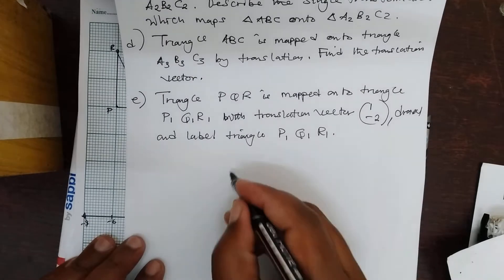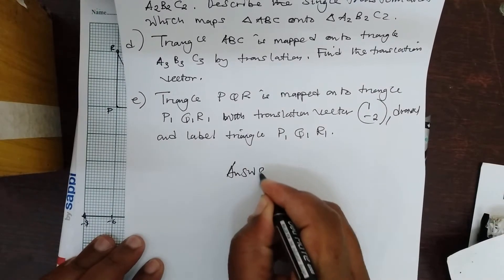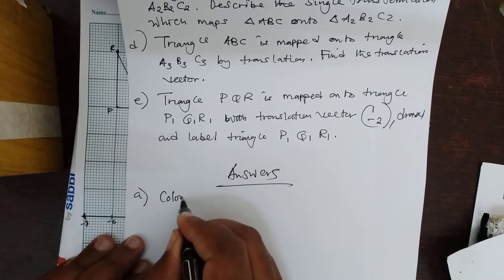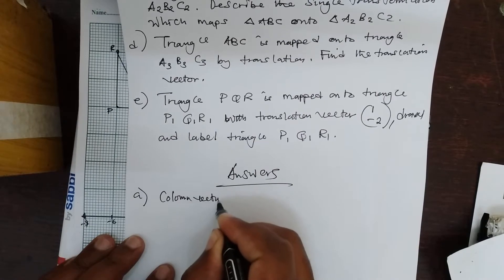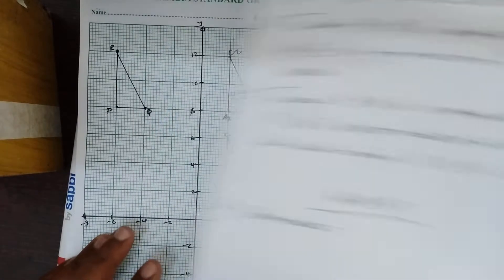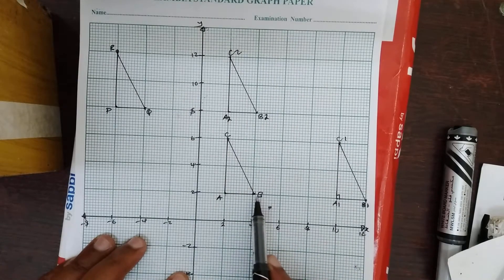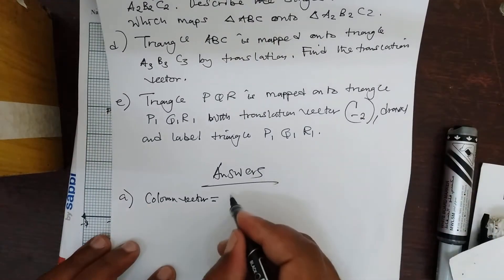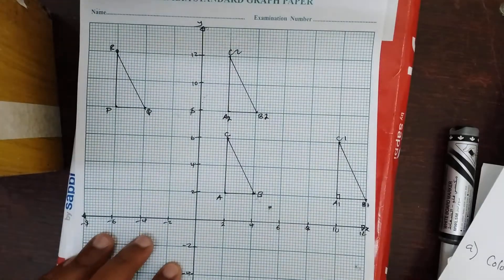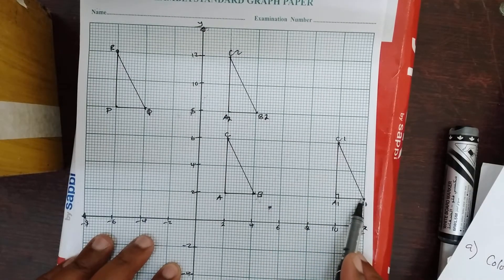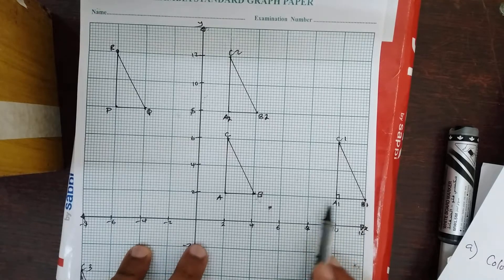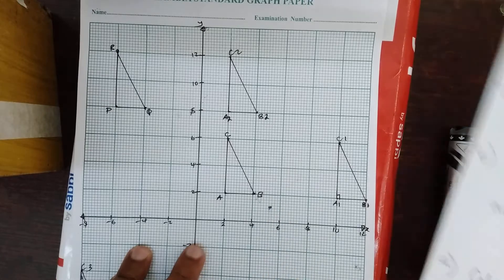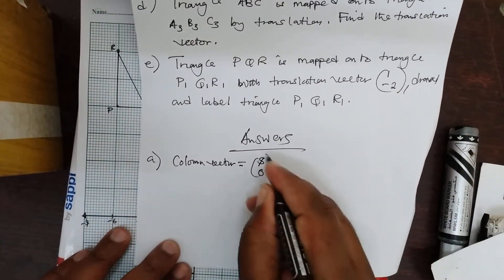So for part A, our translation vector — or column vector — is equal to: with regard to the x-axis we have 2, 4, 6, 8, so x is equal to 8. How about y? If you are dealing with B, you get 2, 4, 6, 8. You realize that with y we have not made any movement, so y is 0. This is the translation vector.